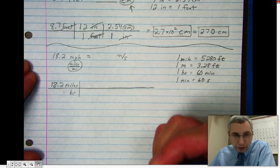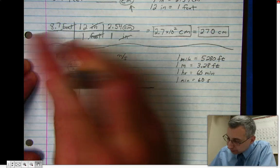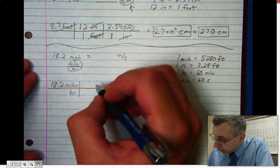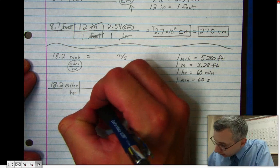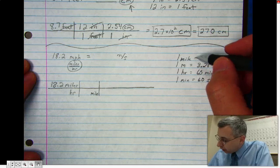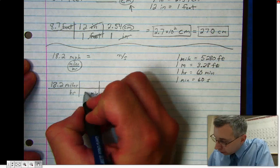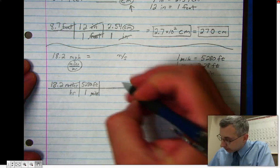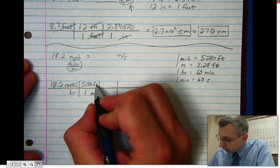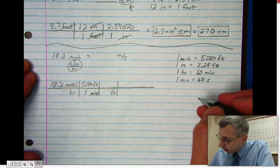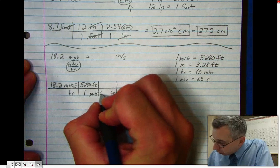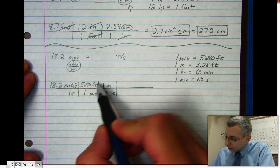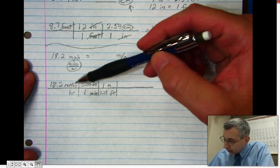Now I've got some work ahead of me. I have to convert 18.2 miles per hour into meters per second, so let's start using some of these equivalent statements. Since miles is up here, I need to have miles down below. One mile is 5,280 feet. Notice how I make sure to write down my units, so miles cancel. Next, since feet is here, I have to have feet down here. I know that 3.28 feet is one meter. Feet cancel. I've successfully now converted from miles to meters.